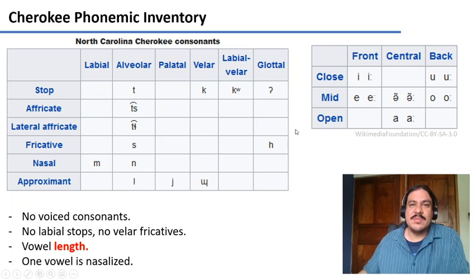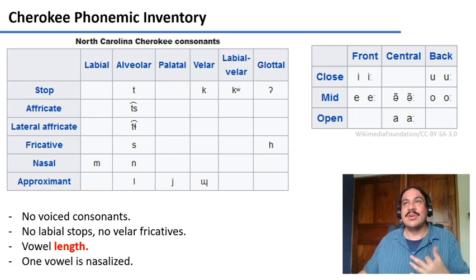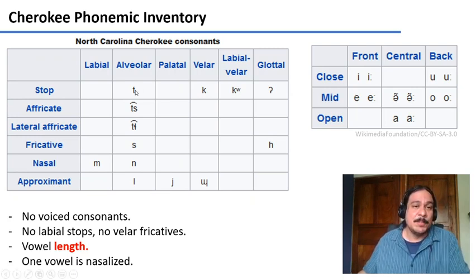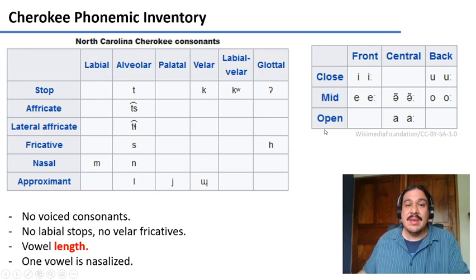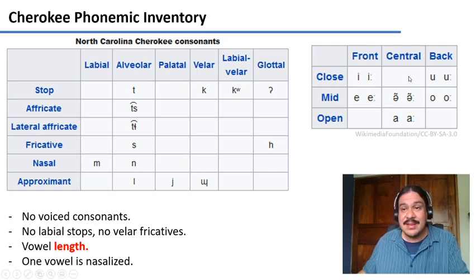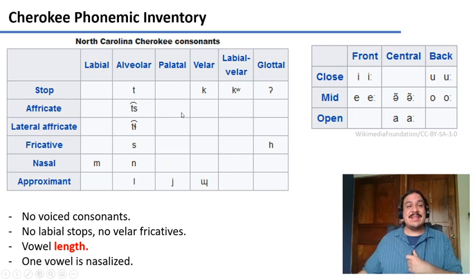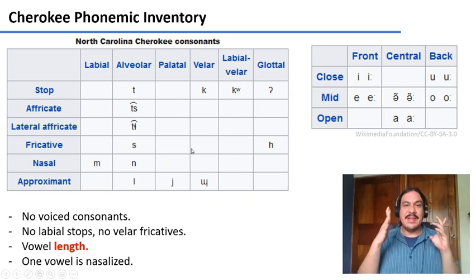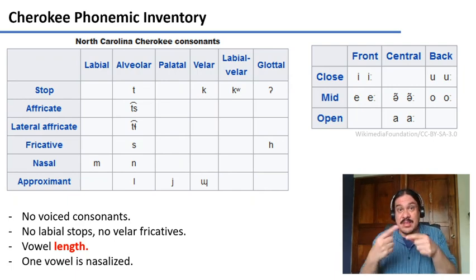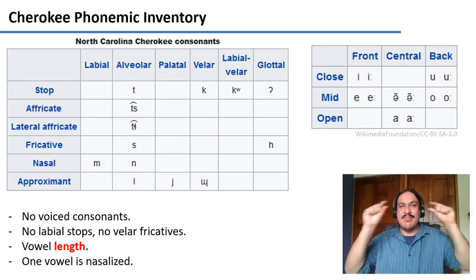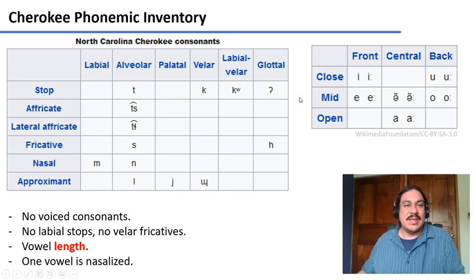This inventory is for Cherokee, a language spoken in North Carolina and Oklahoma in the US. It's an amazing language with its own writing system. It doesn't have voiced consonants — only voiceless consonants. It doesn't have any labial stops — no P, no B. It has vowel length, so vowels can be short or long. Interestingly, there's nasalization, but only for one vowel: the schwa, central mid. So it has a smaller sound inventory, but it's a human language and can combine these pieces to produce any message it wants.